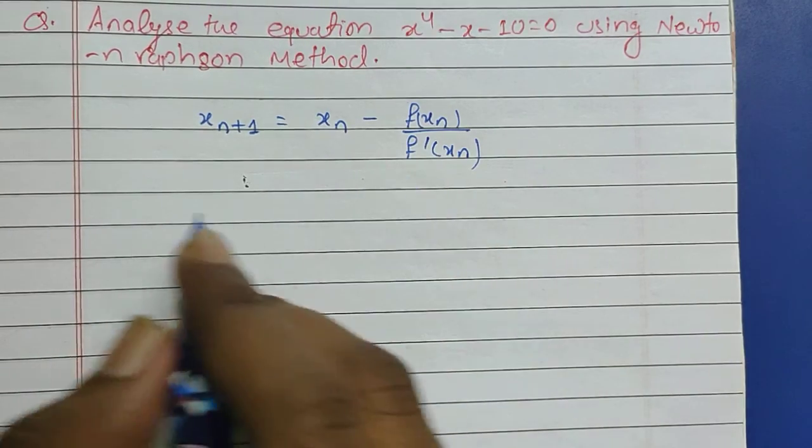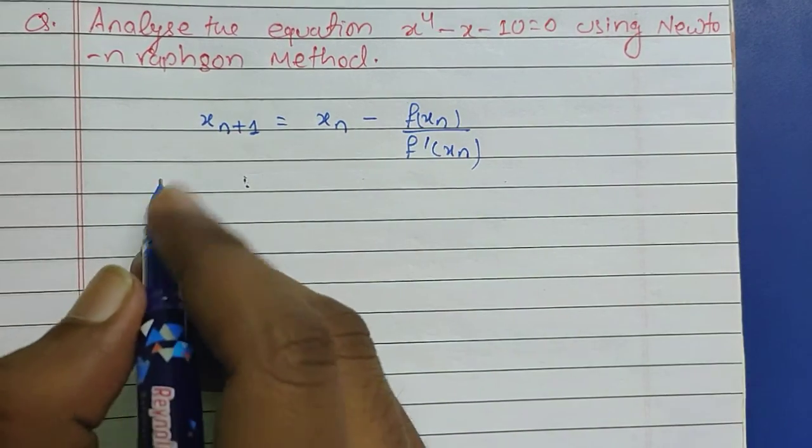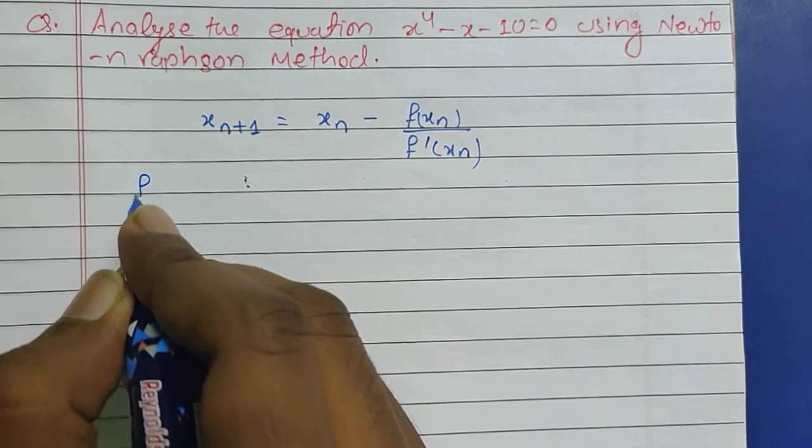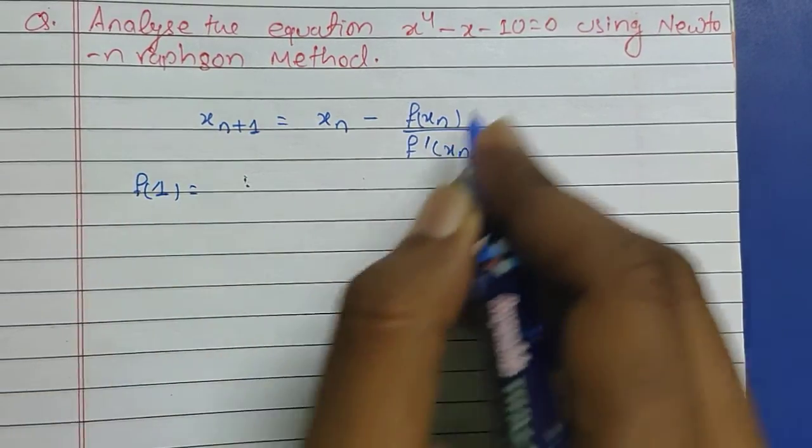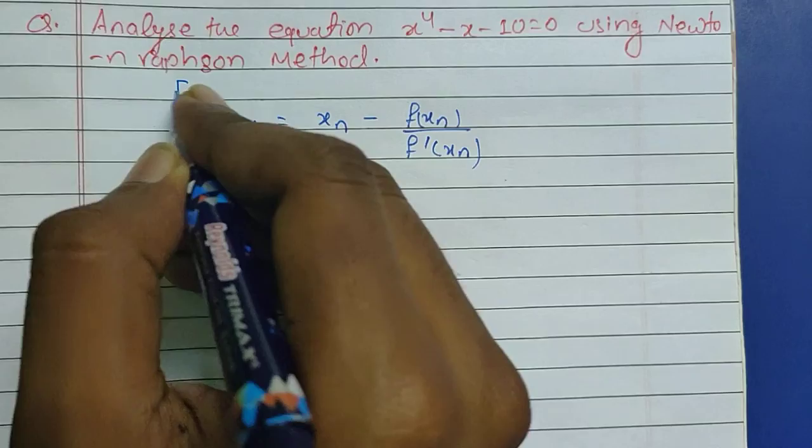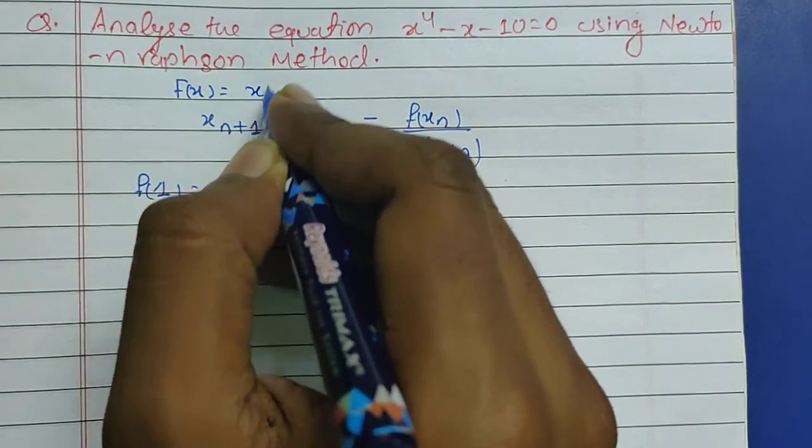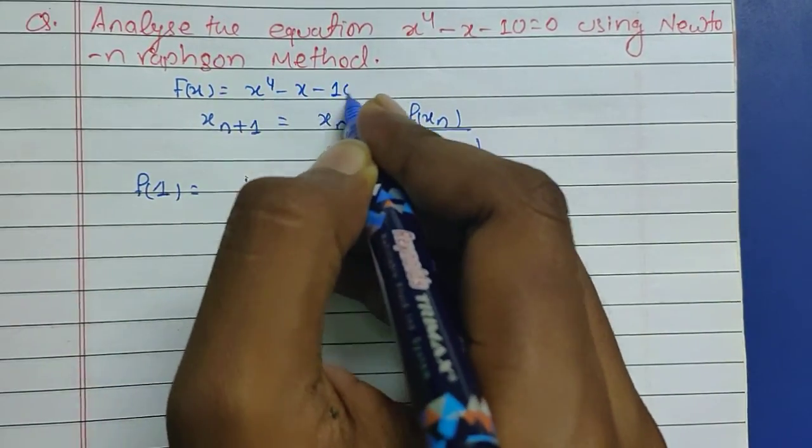Let's see what the random numbers are going to be. So f(1), putting f(1) in this equation we have f(x) = x^4 - x - 10 = 0, so f(1) is going to be -10 and f(2) is going to be 4.